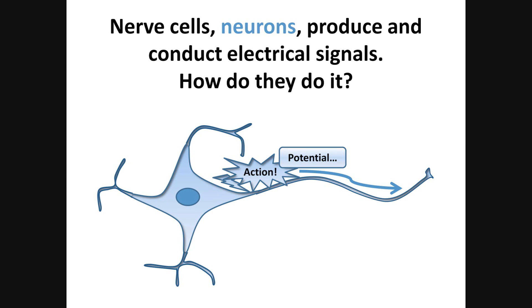What makes the nerve cells, or so-called neurons, so special? They produce and conduct electrical signals. Because of that, we can think, remember, make decisions, act, react, and so on. If I speak, it's because of those electrical signals. If you listen and watch, it's because of those signals.